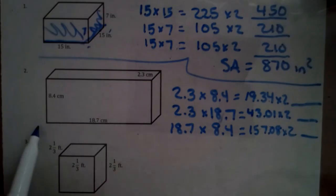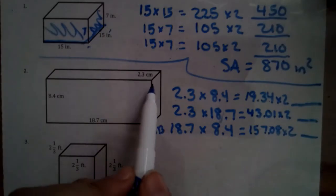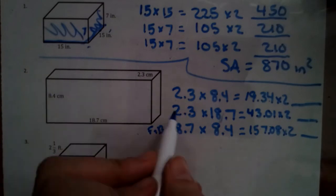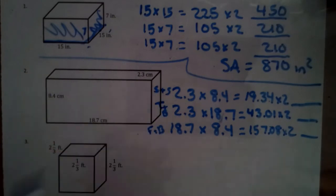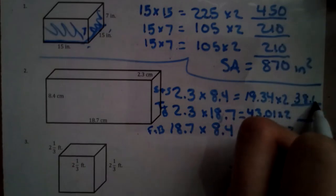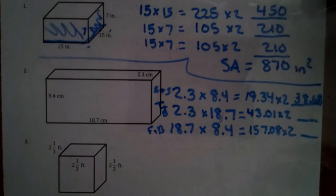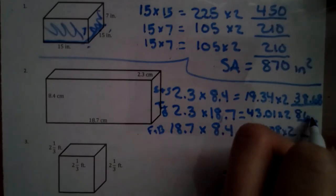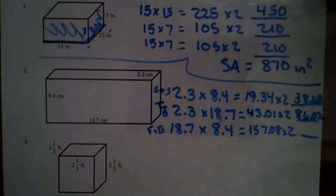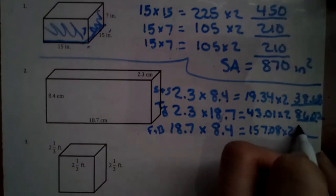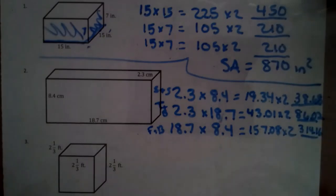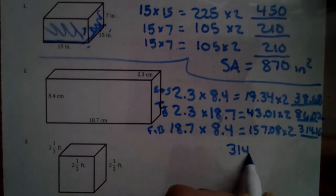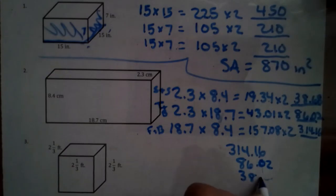Once again, because the 18 by 8.4, that one is the front and the back. So that's the front and back. The 2.3 by 18, that's the top and the bottom. And this is the side and the side. So now we can take the 19.34 and we times that by 2 and we're going to get 38.68. And we have the 43.01 times 2, which is 86.2. And then we have the 157.08 being multiplied by 2, which is 314.16. So then we have to add them all together. So we have 314.16, 86.2 and make that look better, and 2 tenths and 38.68.